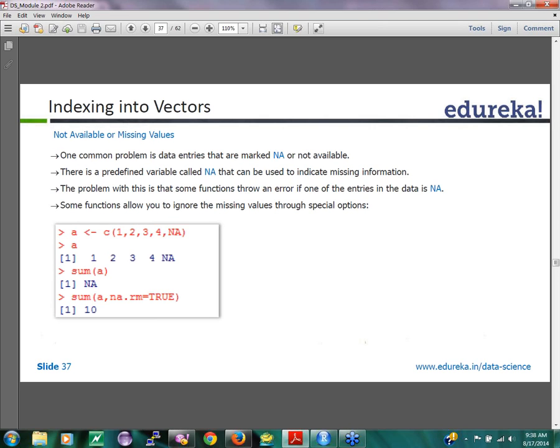The next thing we want to talk about is not available or missing values. Whenever R does not see data for a particular column, which might happen when you are loading data, sometimes a value might not exist for a given row or a given column or a given cell. What does it do with it?